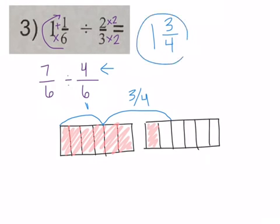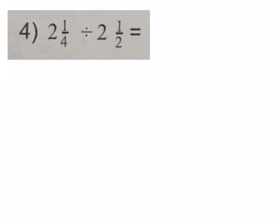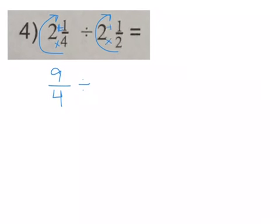Now I'll step you through this one but let you do as much as possible yourself. First, make both into improper fractions and give them common denominators — pause and do that, then come back. I'll do the cartwheel: two times four plus one is nine fourths; and two times two plus one is five halves. Then to get common denominators I multiply the five halves by two to get ten fourths. Hopefully you got that — now model nine fourths, pause it, and come back.